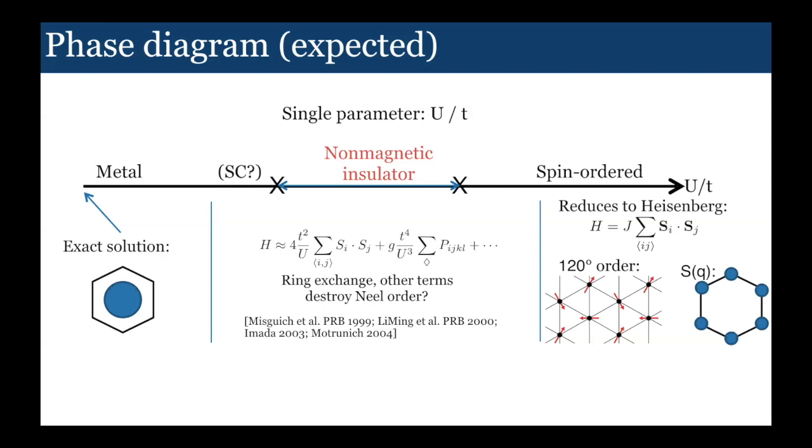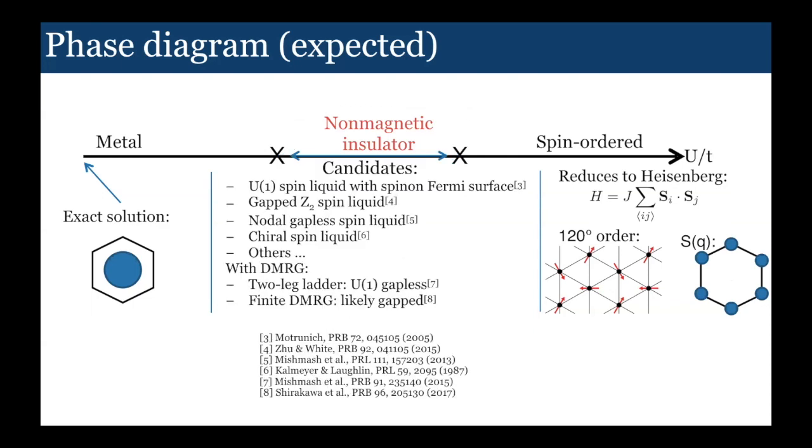That can lead to additional quantum fluctuations, and many different numerical experiments going back to the 90s find that indeed that destroys the Néel order and you get some sort of non-magnetic insulator. So that agrees with what the experiments see, which also sees no magnetic order. But when we say something is a spin liquid, there's of course many different types of spin liquids. You could have the famous spinon Fermi surface, gapped Z2 spin liquid, nodal gapless states, chiral spin liquids, etc.